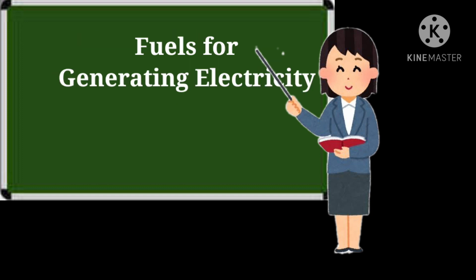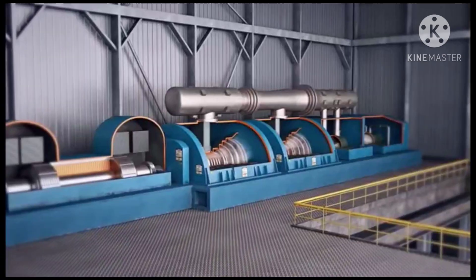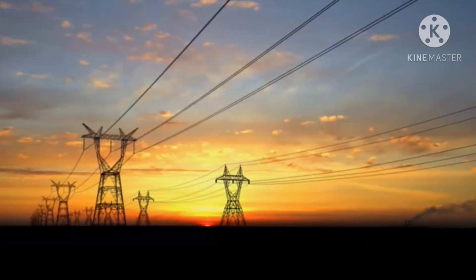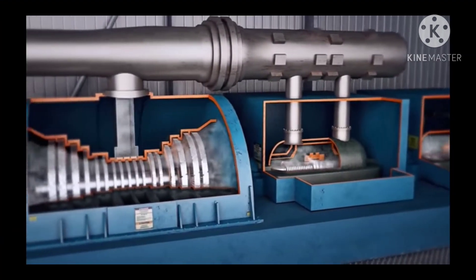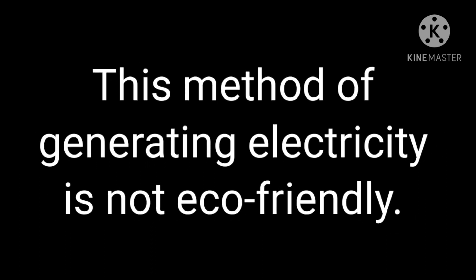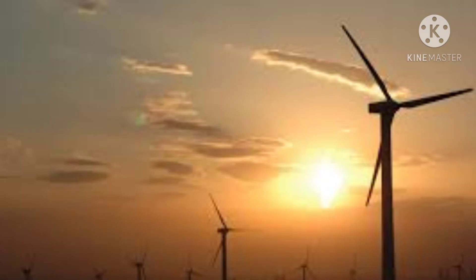Now children, we will talk about the fuels for generating electricity — ki electricity generation ke liye kis tarah ke fuels ka istimaal kiya jaata hai. Power houses often burn coal to convert water into steam. Coal jaata hai power houses mein, and this steam energy is used to operate turbines which in turn help to generate electricity. Steam energy ka istimaal kiya jaata hai turbines ko ghumaane mein, jis ki wajah se electricity generate hoti hai. But this method of generating electricity is not eco-friendly — yani ki ye environment ko harm karti hai. So it is being gradually given up, and other better and more eco-friendly methods are now being used for generating electricity.